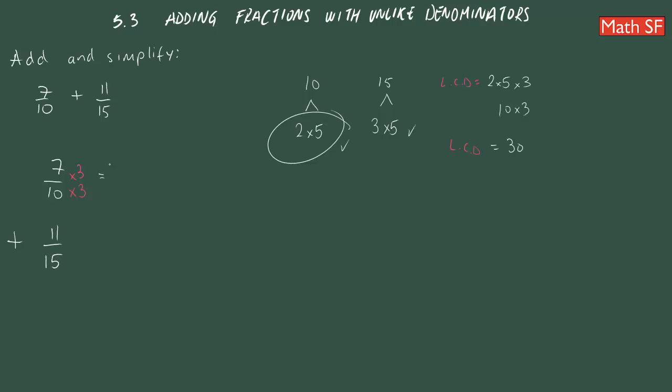So, these are called equivalent fractions, but they do have the same value. 7 times 3 is 21 over 10 times 3 is 30.